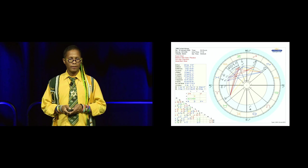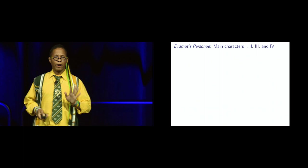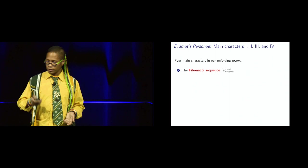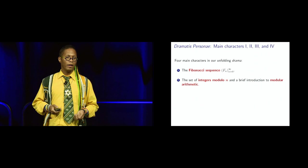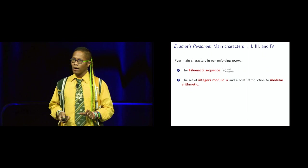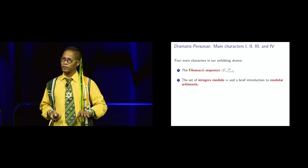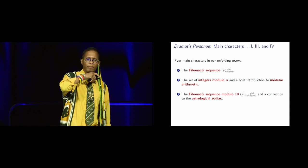So, let's move on to the math. Math, math, math. Enough of that. Is that all I want to say? Yeah, that's all I want to say about that. Okay. So, there's four main characters in the project number one. The first character in this unfolding drama is the Fibonacci sequence. I'm going to denote F, capital F sub N, which is a standard notation. The set of integers, modulo N, and a brief introduction to modular arithmetic. I might go fast through that because most of us in the room know modular arithmetic, but I also want to put it in there in case there is at least one or two because it's an important aspect of the talk.